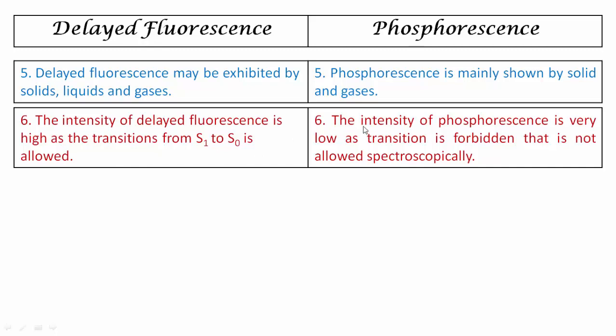In case of phosphorescence, the intensity is very low because the transition is forbidden. The transition takes place from T1 state to S0 state, meaning the involved states have different multiplicity. According to the selection rule, a transition between states of different multiplicity is a forbidden transition, and hence the intensity of phosphorescence is very low.